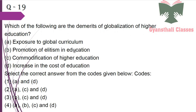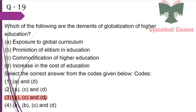Next question: Which of the following are the demerits of globalization of higher education? Exposure to global curriculum — no; promotion of elitism in education — yes; commodification of higher education — yes; increase in the cost of education — yes. So the answer is B, C and D.